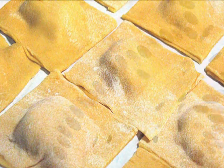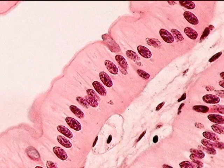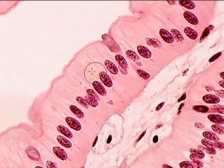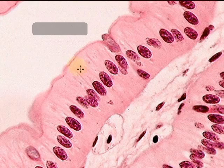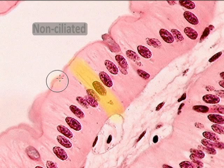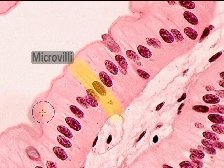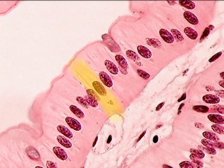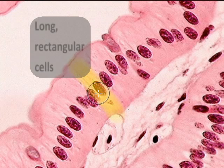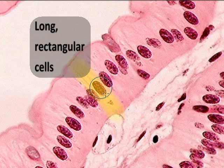Our next epithelial tissue is simple columnar epithelium. Again, 'simple' means one layer of cells. This is non-ciliated columnar — there's no cilia at the top; those are microvilli, which are membrane-like fingers and microscopic structures to aid in absorption and secretion. The columnar cells are very long, much longer than they are wide — column-like and rectangular.